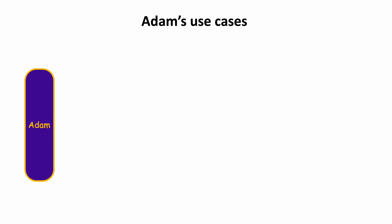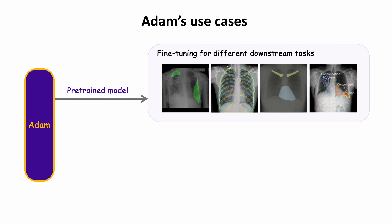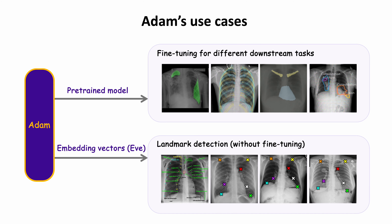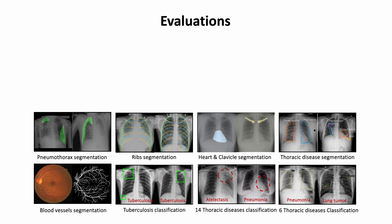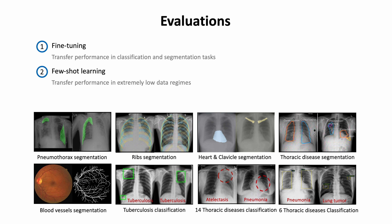After training, ADAM's model can be adopted for diverse target tasks by fine-tuning, and the embedding vectors derived from ADAM — EVE — can be used standalone without adaptation for tasks like landmark detection. We extensively evaluated ADAM on nine target tasks involving fine-tuning, few-shot learning, and investigating the semantic richness of EVE in anatomy understanding.